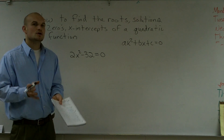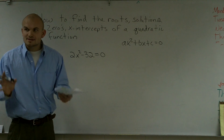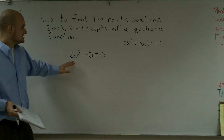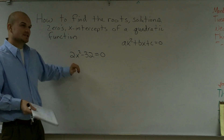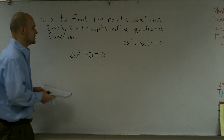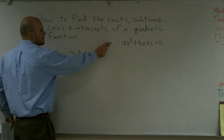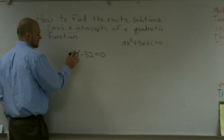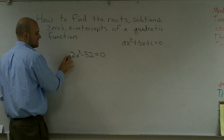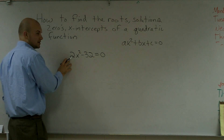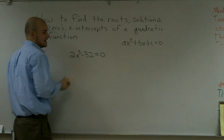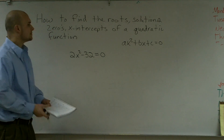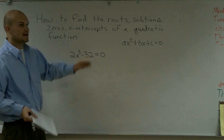The first step you always want to do is factor out your GCF. I look at every single term, and here I have my quadratic form, where my A term is 2, my B is 0, and my C is negative 32.